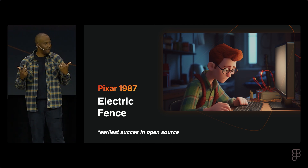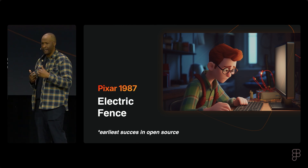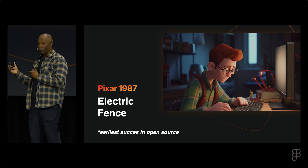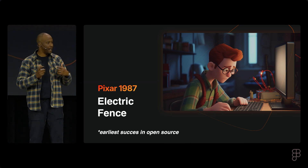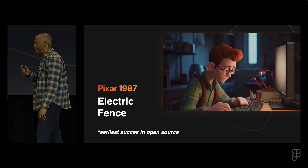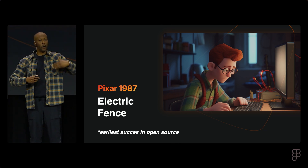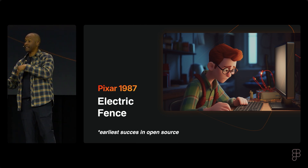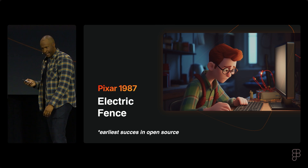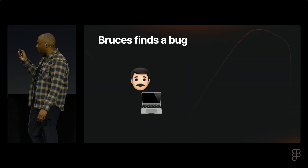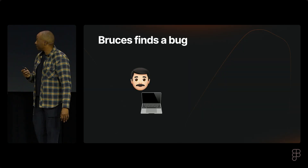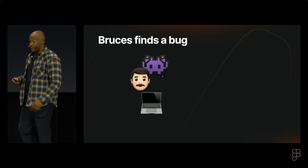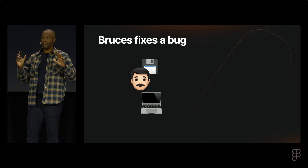I want to talk about one of the earliest successes in open source — actually at Pixar. Bruce is the engineer at Pixar in the 80s who had a bug that used to come up all the time in their software. His idea was: what if I could just not have to refix this bug every single time? In the 80s, most engineers looked like this with the mustache and everything — and actually engineers look like this today too.